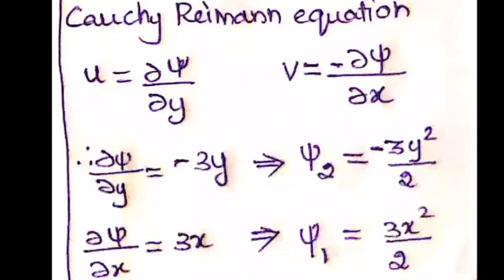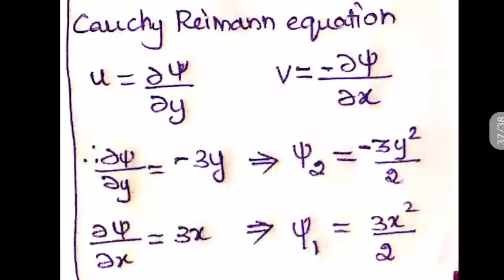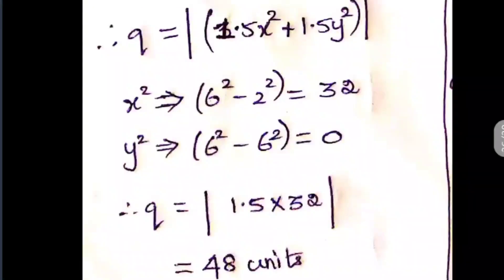Using the Cauchy-Riemann equations, u = ∂ψ/∂y and v = −∂ψ/∂x. Substituting the known u and v values: integrating −3y with respect to y gives −3y²/2 = −1.5y² (stream function 2), and integrating 3x with respect to x gives 3x²/2 = 1.5x² (stream function 1).